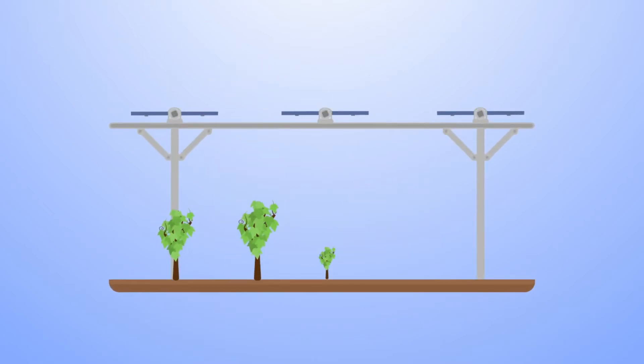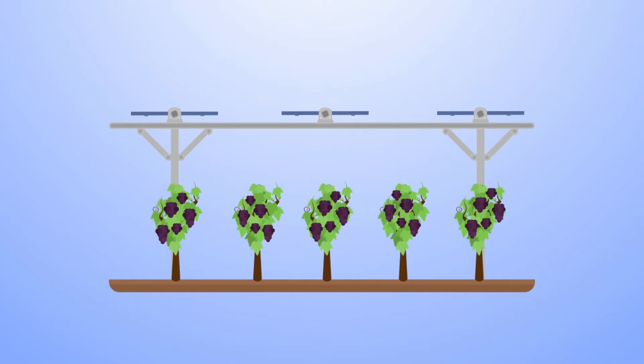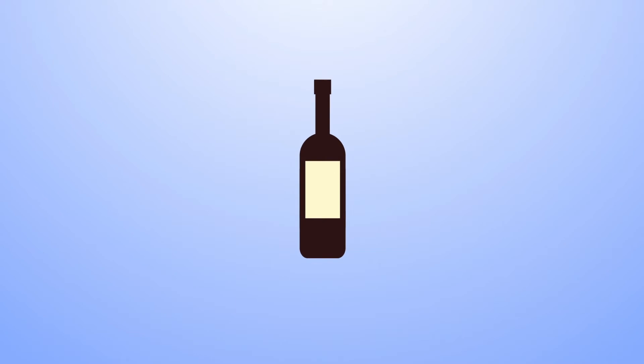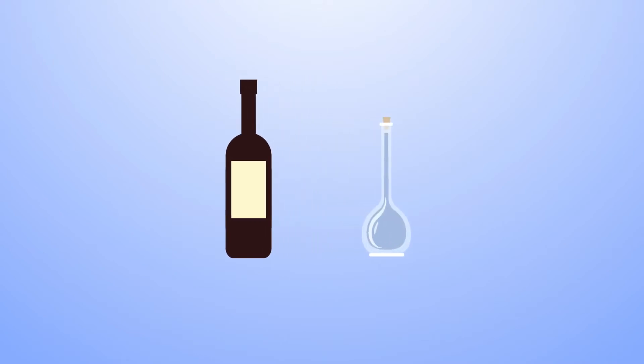The SunAgri solution is particularly adapted to high-value added crops. In viticulture, regulating microclimate improves the quality of wine, thanks to the reduction of alcohol level and the preservation of aromatic profiles.